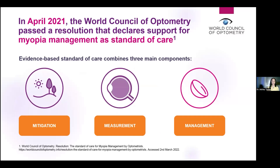In April 2021, the World Council of Optometry signed a resolution declaring support for myopia management as standard of care. There are three pillars: mitigation — talking about regular eye exams and preventing myopia onset; measuring it with refractive error and axial length when available; and managing it with the three evidence-based options. This lecture is more about how to implement myopia management into your practice, but because I'm such an enthusiast, I have to at least touch on some of these things.